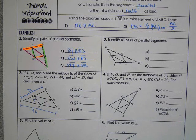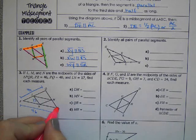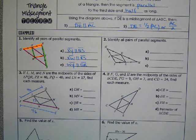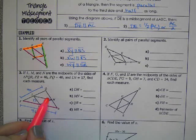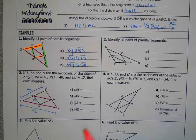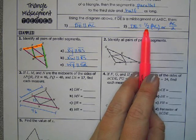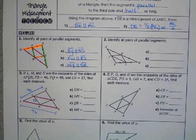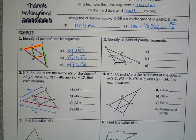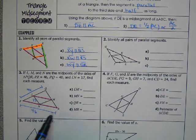So if we look at PR, the parallel midsegment to that would be LM. And according to our midsegment theorem, the midsegment is half of the side that it's parallel to. So LM is half of PR. So half of 46 is 23.